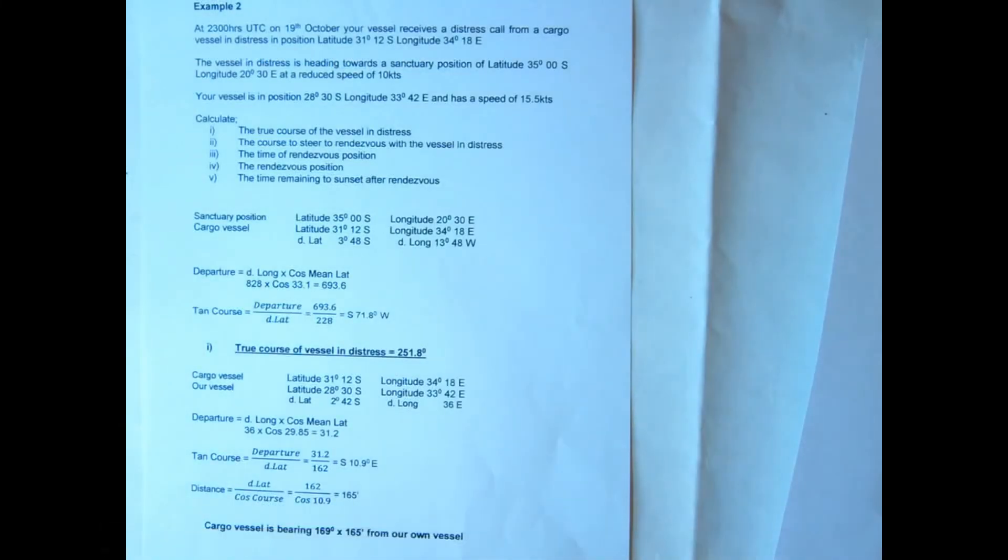We'll have a look at another rendezvous question. We're given a time UTC 2300 to receive a distress call from a cargo vessel position given, and that vessel is heading towards a sanctuary position given there at reduced speed of 10 knots.